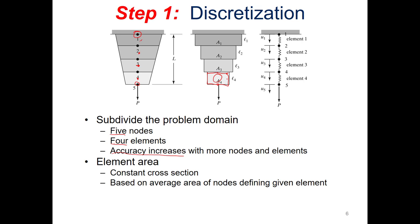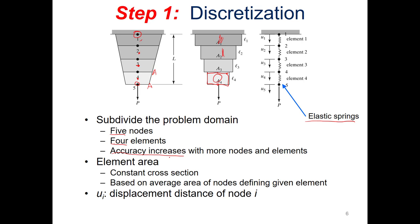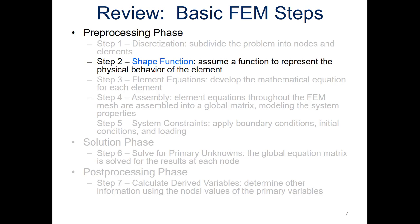The element area is a constant cross-section based on the average of the area at the two bounding nodes — for example, the average of the area at node four and node five. Between our nodes we essentially have elastic springs representing the motion of our bar sections, and we'll look at the displacement at each node, keeping it generic by calling each node location node i. That completes the discretization step — we've subdivided our problem into nodes and elements. Now we'll look at shape functions.